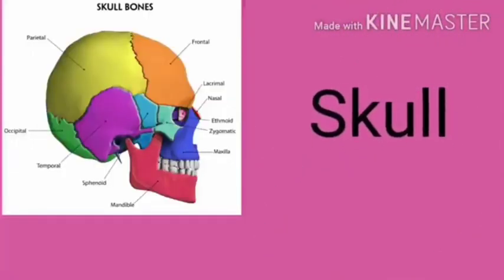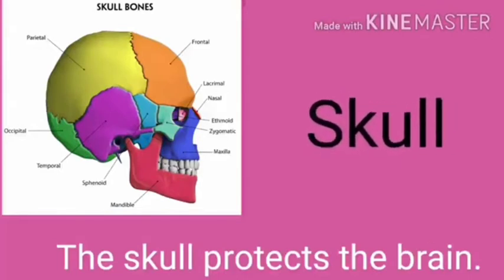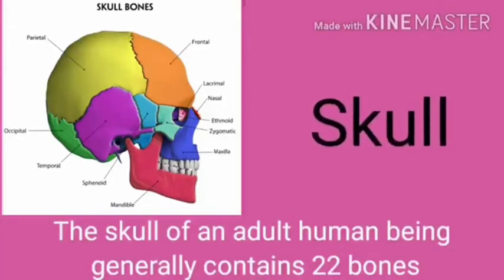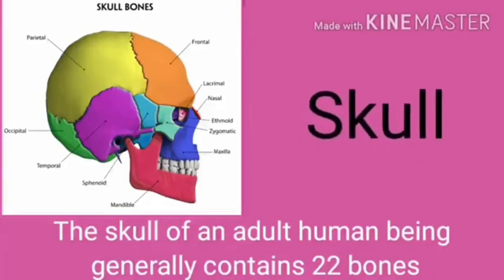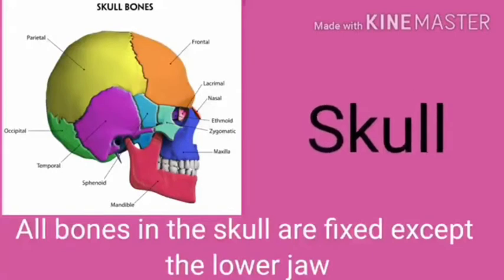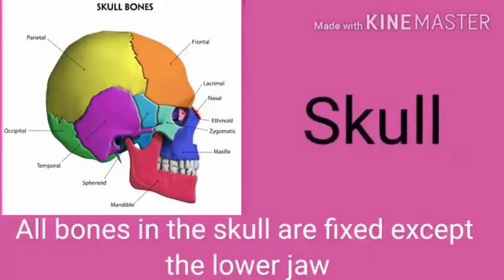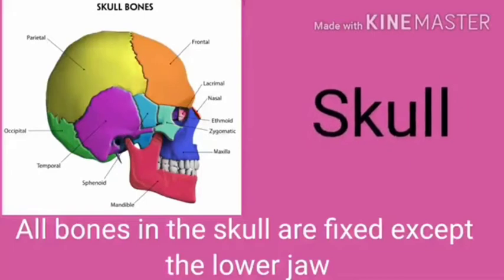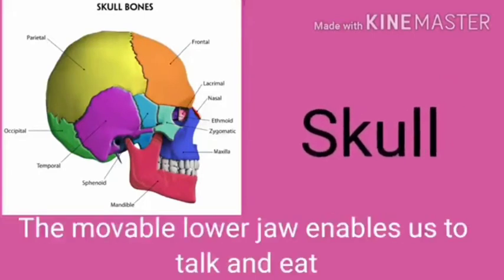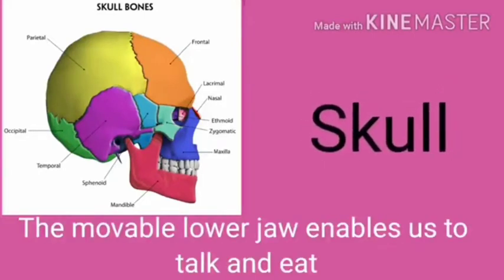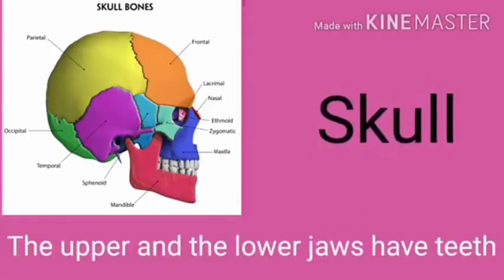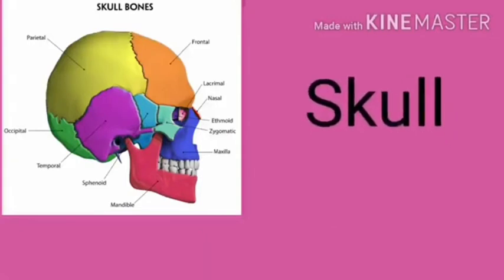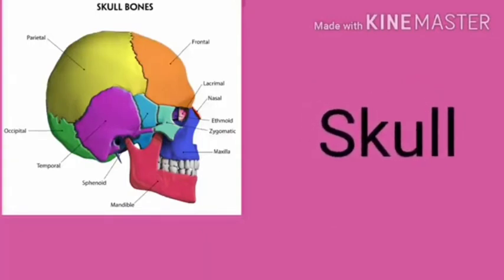Let us start with the skull. The skull protects the brain. The skull of adult human beings generally contains 22 bones. All bones in the skull are fixed except the lower jaw. The movable lower jaw enables us to talk and eat. The upper and lower jaw both have teeth.